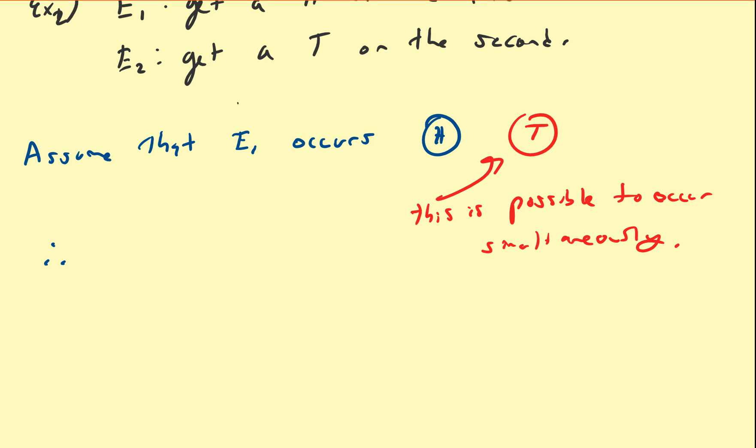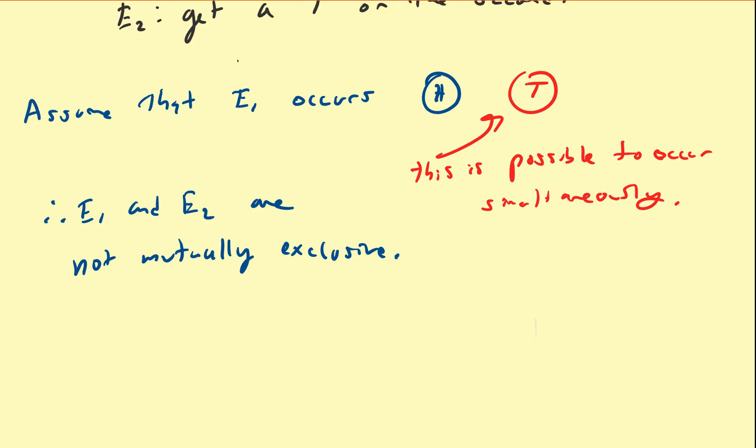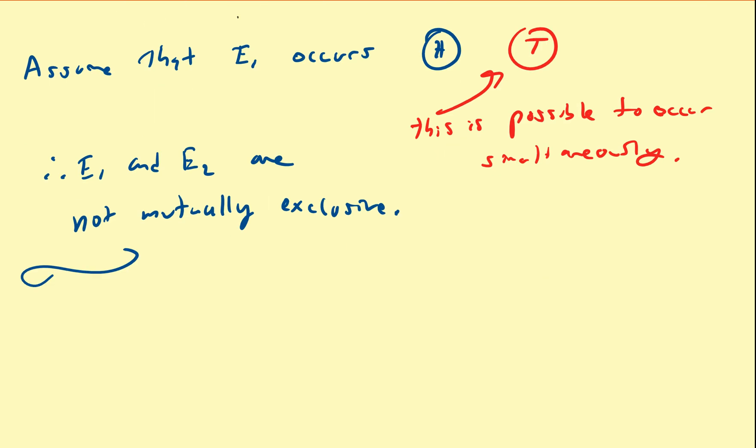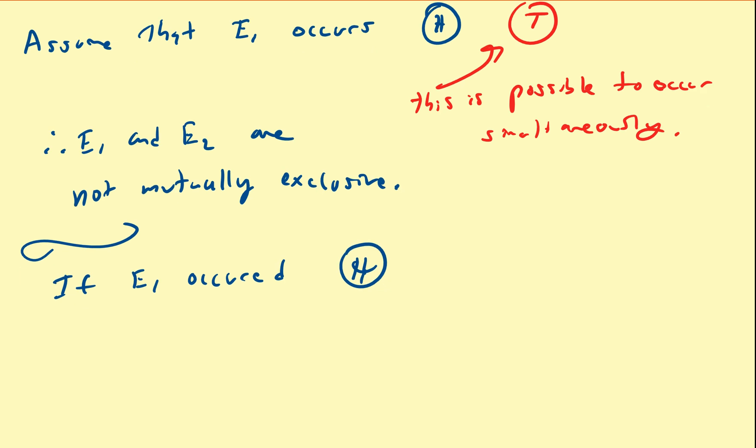So if E1 occurred, that means we have heads on the first. Is it possible to get a heads on the second? Of course it is. So it's definitely possible that we can have heads on the first and heads on the second.